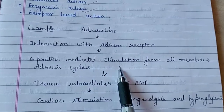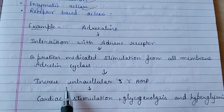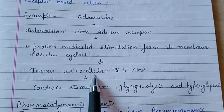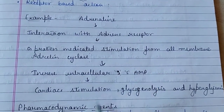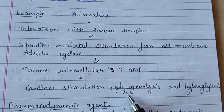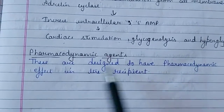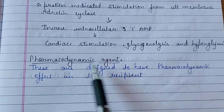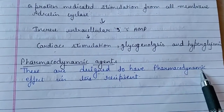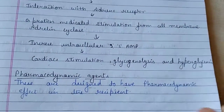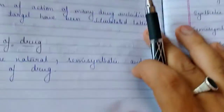For example, adrenaline interaction with adrenoreceptor binding is G-protein mediated, stimulating adenylate cyclase from the cell membrane, which increases cyclic AMP (3',5'-AMP), leading to cardiac stimulation, glycogenolysis, and hyperglycemia. These are the pharmacodynamic effects.